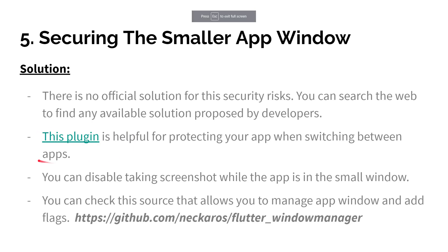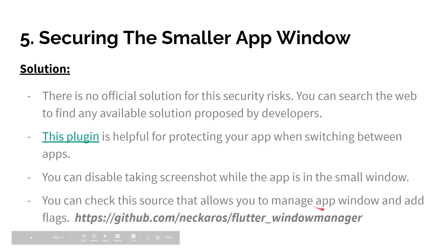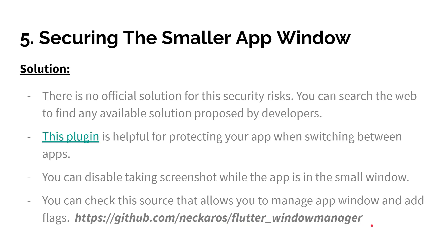You can also disable taking screenshots while the app is in the small window, or generally when a user is working with your app. You can check this source that allows you to manage the app window and add flags — there is a GitHub URL you can visit to check the resource. So generally these were five different security threats for any mobile application, Android or iOS.